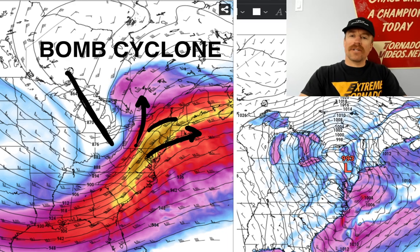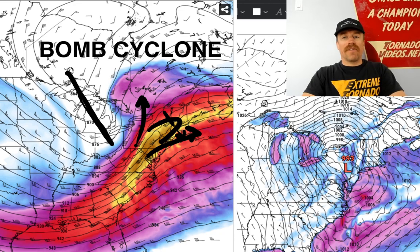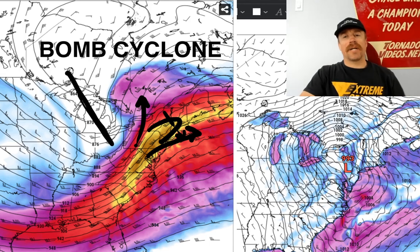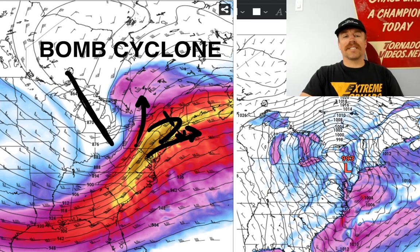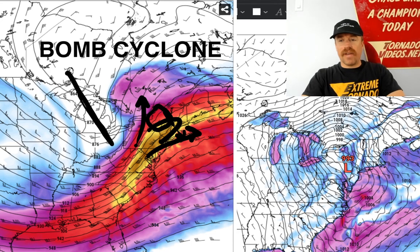You also have a jet streak here at 300 millibars. There's an ageostrophic wind component directed from left to right in that configuration. When you're slowing down in the U direction and rotate that axis parallel to the jet streak, that creates a left-to-right oriented ageostrophic wind component. That enhances the difluence even more in the left exit region of that jet streak, and beneath that is where there's going to be rapid deepening of the surface low.